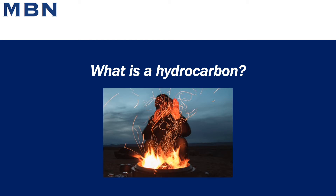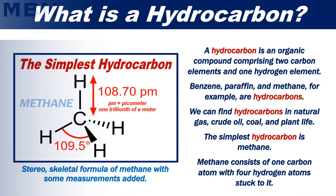What is a hydrocarbon? A hydrocarbon is an organic compound comprising two carbon elements and one hydrogen element. Benzene, paraffin and methane, for example, are hydrocarbons.